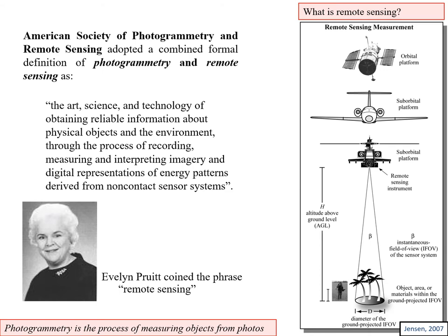The phrase 'remote sensing' was coined by Evelyn Pruitt. Photogrammetry is the process of measuring objects from photos. We have two big subsets of remote sensing: one is photogrammetry, and the other is photo interpretation, which is about getting information about the identification or identity of objects in remotely sensed data.